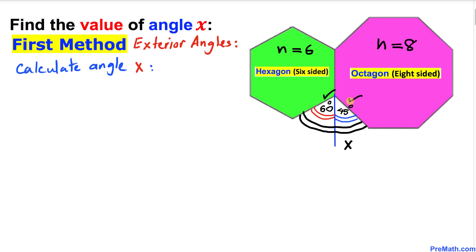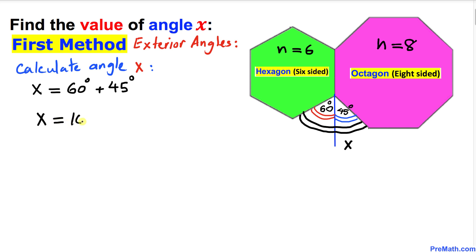Let's add them up. Therefore x equals 60 degrees plus 45 degrees, and that gives us 105 degrees. That is our x value.